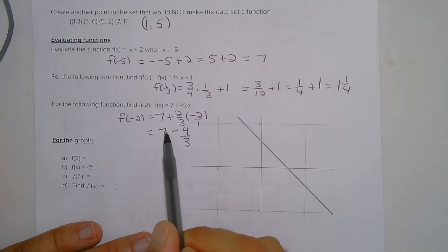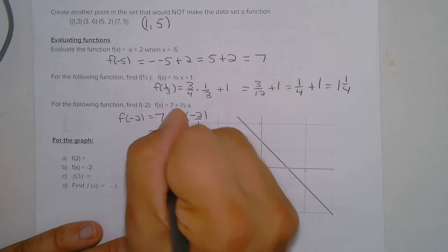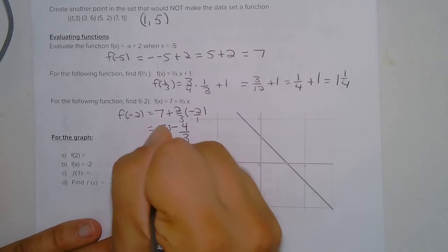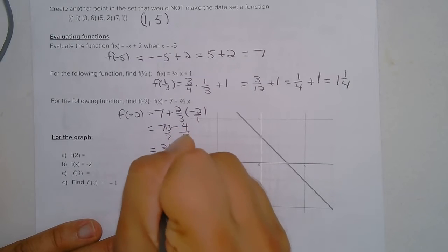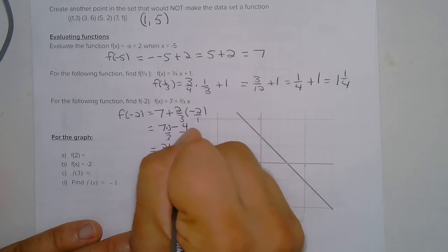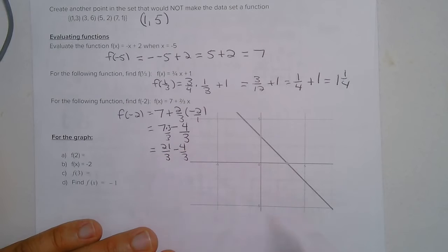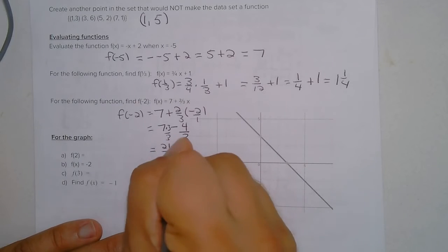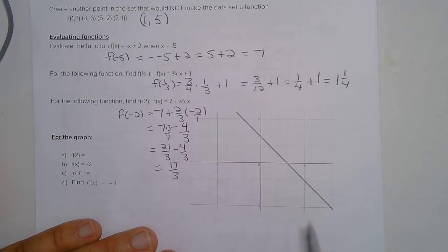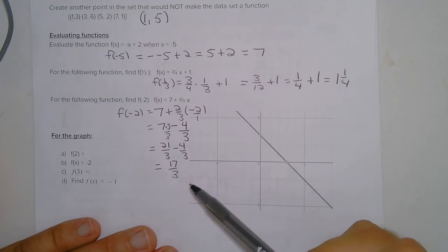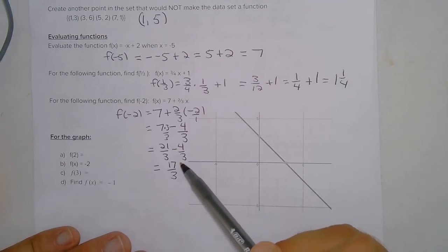So now what I'm going to do is change this and multiply the numerator and the denominator of 7 by 3. So this is 21 over 3 minus 4 over 3. And 21 minus 4 is 17 over 3. And I'm going to leave that as an improper fraction. You could turn it into a mixed number or a decimal.